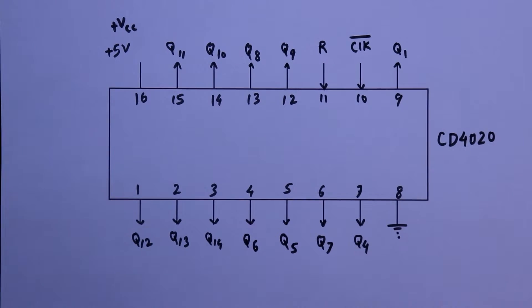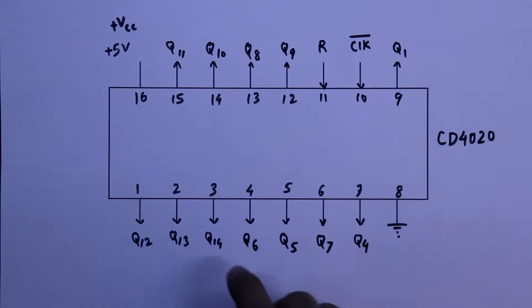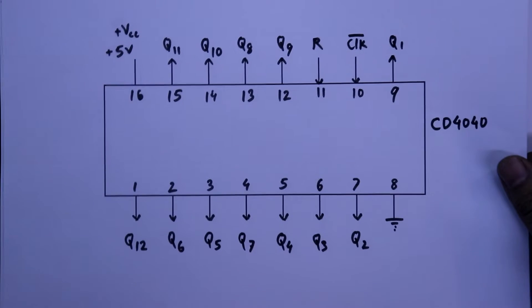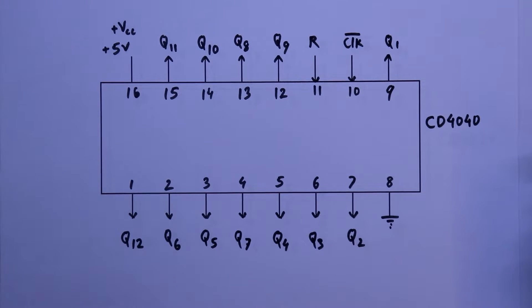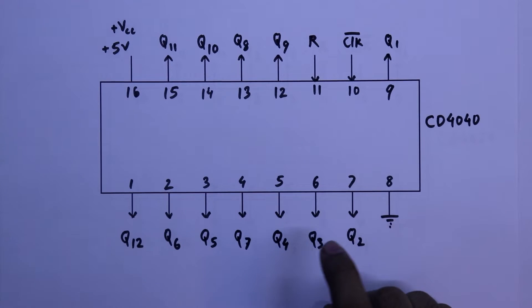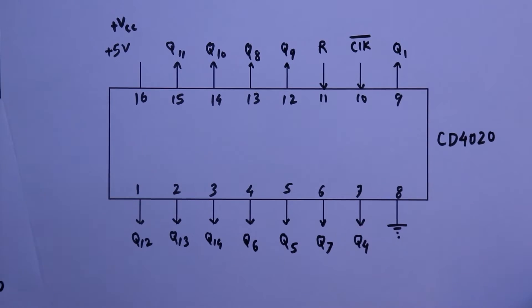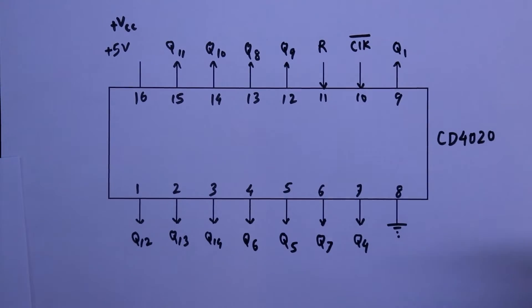In the 4020 we have Q13 and Q14, but in the 4040, Q13 and Q14 are missing. In the 4040, we have Q2 and Q3, but in the 4020, Q2 and Q3 are missing. So this is the only difference.